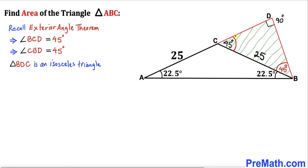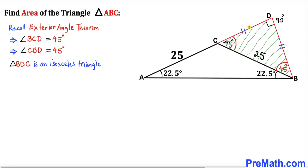These two angles are congruent, so triangle BDC is an isosceles triangle. Therefore, the two legs are equal in length. Let's call side length CD equal to a units; then side length BD is also a units.